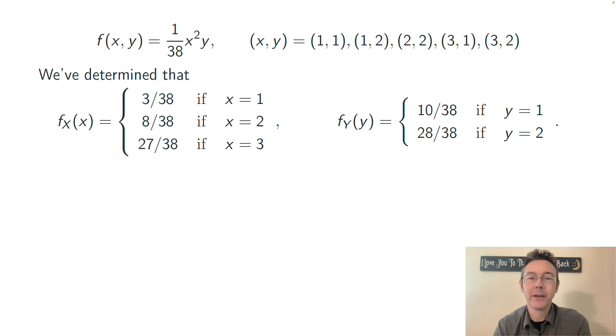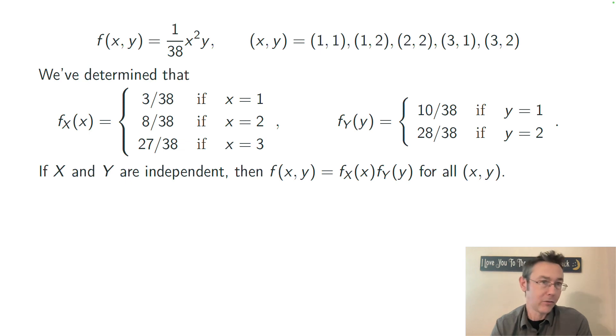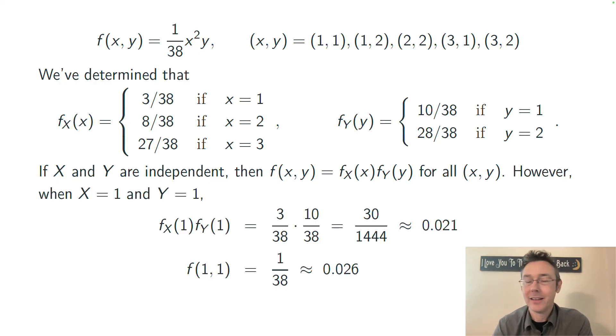Let's conclude by showing that these two random variables are not independent from one another. Here's the condition. For every combination of values that we see, (x,y), we have to have f(x,y) equals f_X(x) times f_Y(y). And you can just try plugging in some of those values.